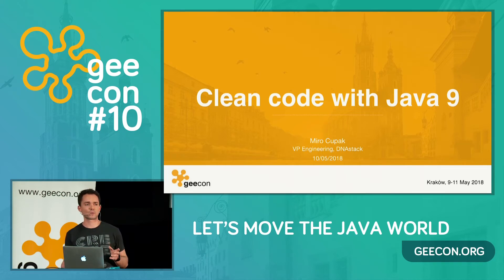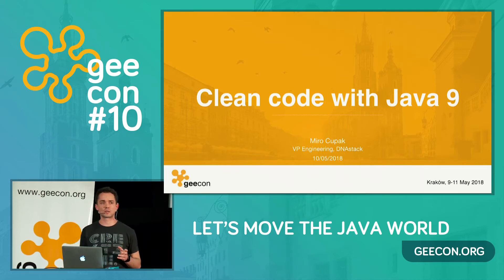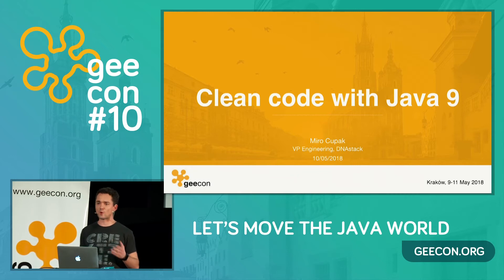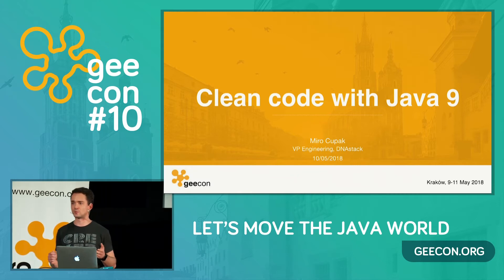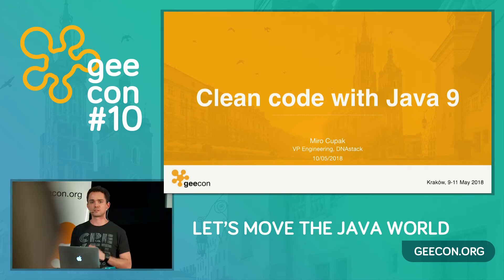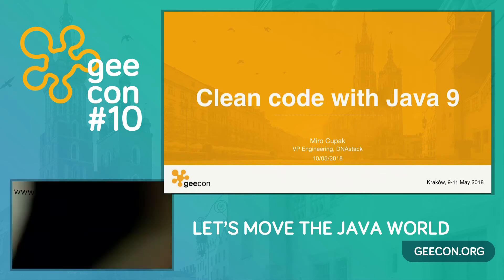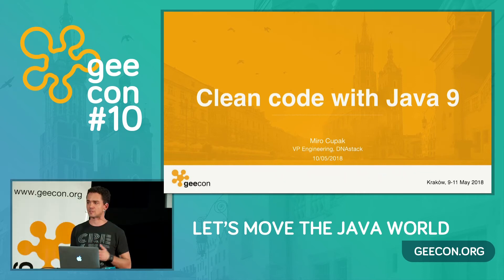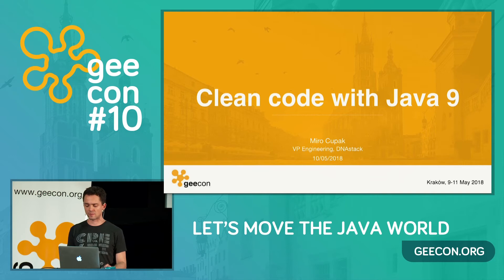We're going to talk about basically small things people don't usually talk about — various convenience methods, small APIs, minor enhancements to existing APIs in Java 9, and let's just see how it goes.